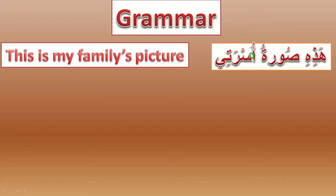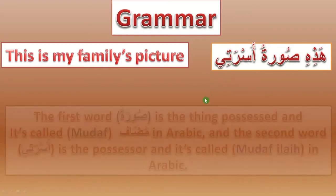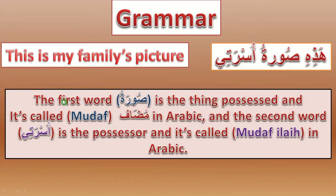It's the opposite of English. We put the possessed in the beginning and the possessor after that. The first word سورة is the thing possessed and it's called مضاف in Arabic. The second word أسرتي is the possessor and it's called مضاف إليه. So سورة is مضاف and أسرتي is مضاف إليه.